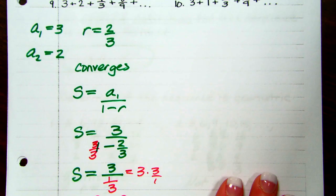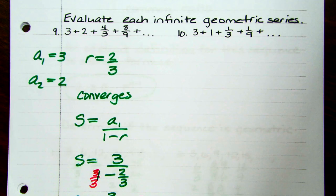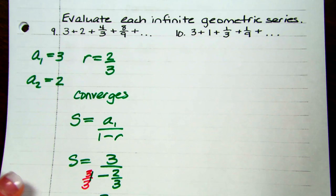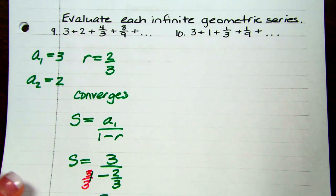Number 10 is left for you to try — determine whether it converges or diverges, and if it converges, find the sum. The completed notes will be posted that afternoon. The homework should be just like the problems we did in the notes. Lessons 1, 2, and 3 are done — they'll be there for you if you want to work ahead. Thank you.